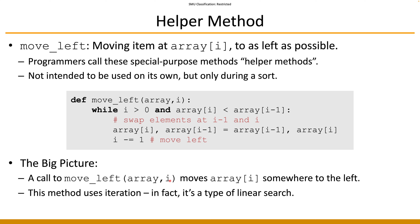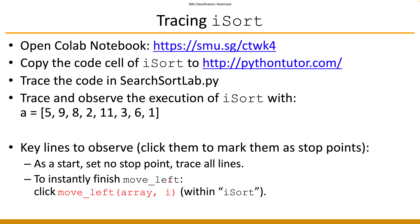This is very similar to linear search. Now that we have introduced the helper function, we are ready to trace the actual program. If you want to execute the function you can use the Colab notebook, but I highly recommend you copy both the i_sort and move_left functions into Python Tutor and use a small example like the one provided to observe what actually happens.